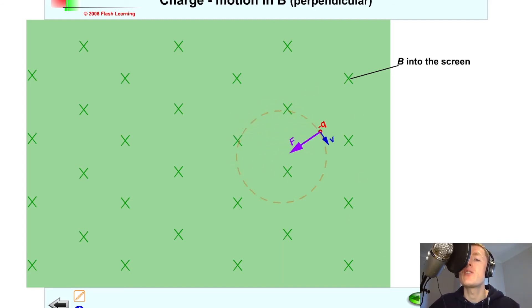The reason we've got a smaller path traced out by the charge this time is because B is larger, which means that the force increases, the radius becomes smaller, and the period becomes shorter. And the period is just the time taken for this charge to go round in one full rotation, one complete circle.